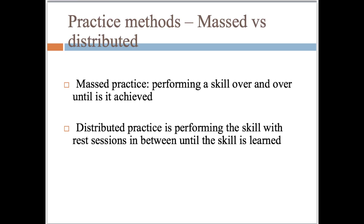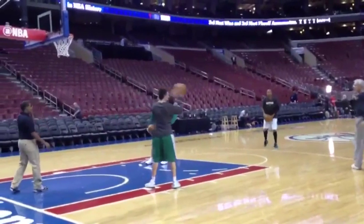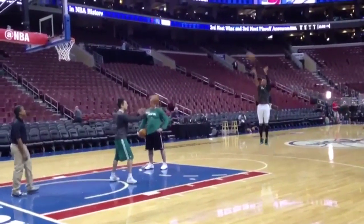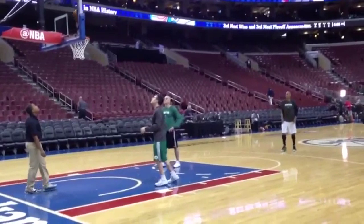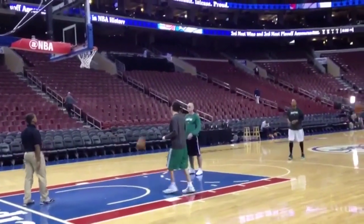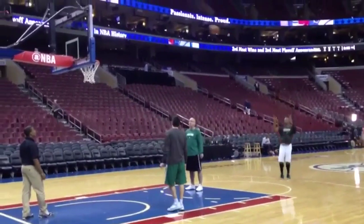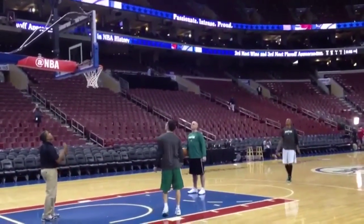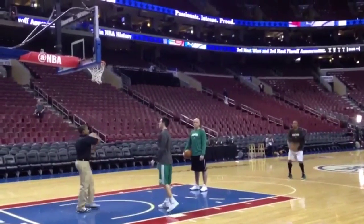Massed practice involves performing a skill over and over again until it is achieved, while distributive practice is performing a skill with rest sessions in between until the skill is learned. For example, this basketballer's name is Ray Allen and he's the greatest three-point shooter of all time in the NBA. During the season and off-season, he'll shoot a bare minimum of 500 shots a day.